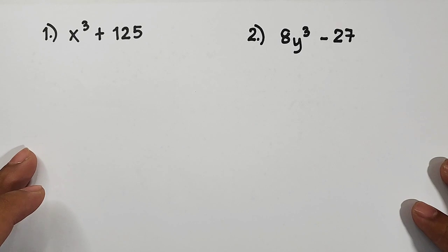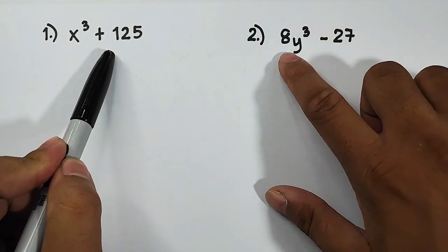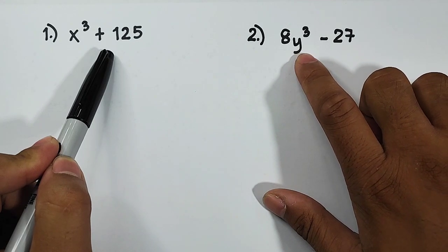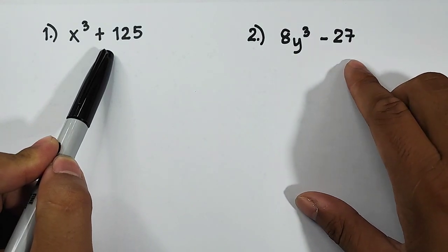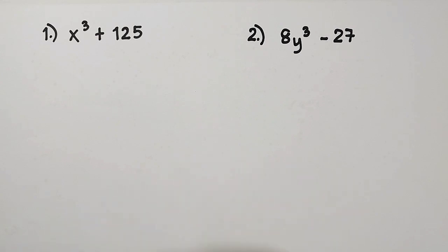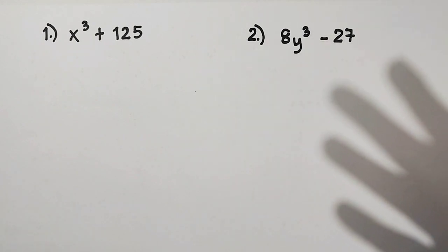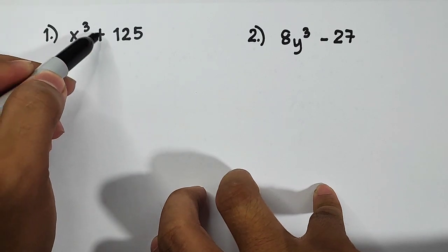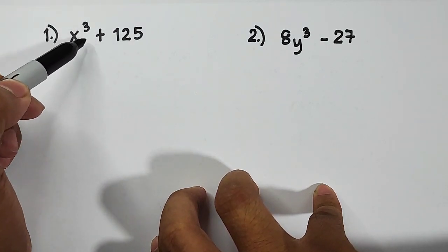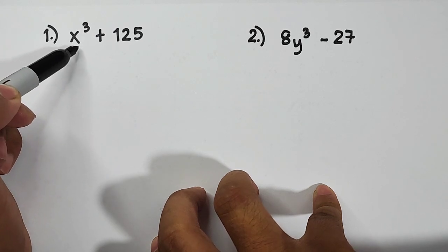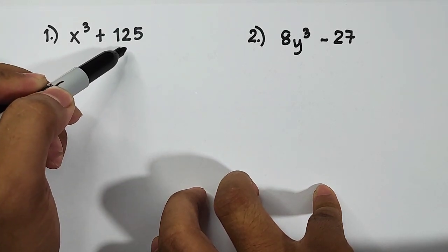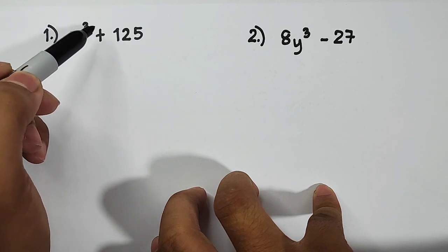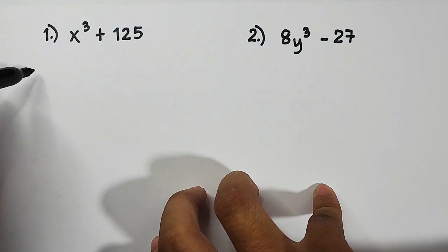Before diving into this given problem, let's first look at two examples. We have x cube plus 125 and 8y cube minus 27. We will use two different patterns on how to factor out the sum and difference of two cubes. In this first expression, as you can see, the first term is a perfect cube, the last term is also a perfect cube, and the sign is plus.